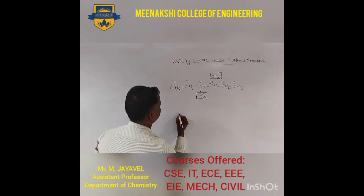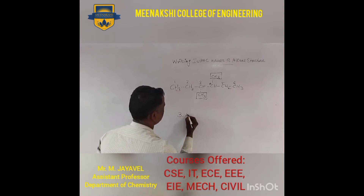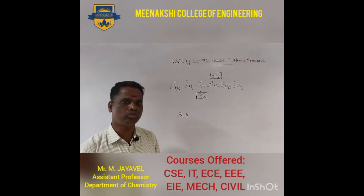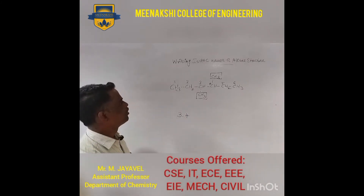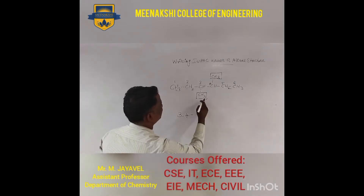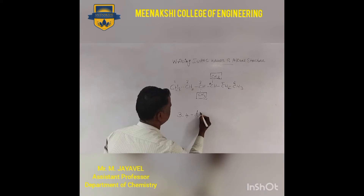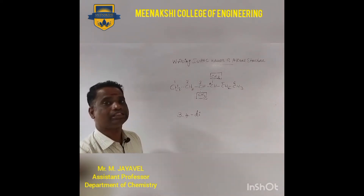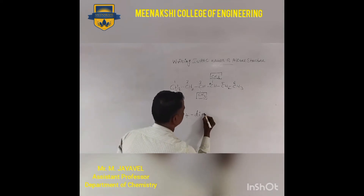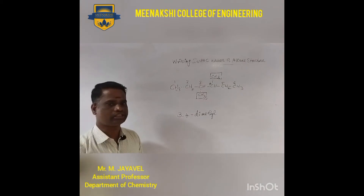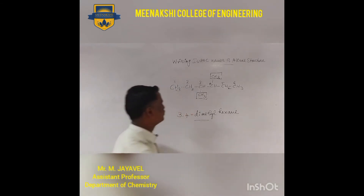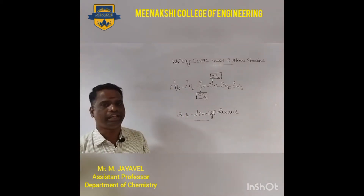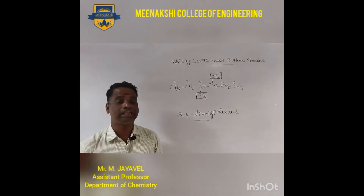Now you can write the IUPAC name. The two identical groups are attached at positions 3 and 4 on two different carbon atoms in the chain. So use the word 'di' for two identical same groups: 3,4-dimethyl. The longest chain is 6, so hexane. Therefore, 3,4-dimethylhexane is the correct IUPAC name of the given structure.